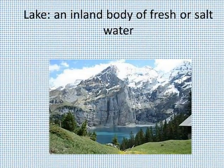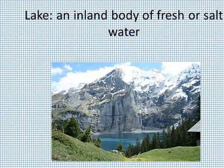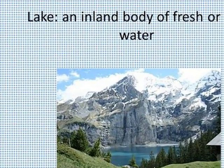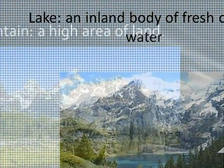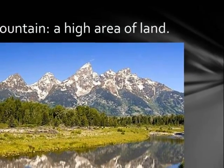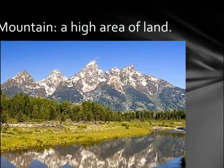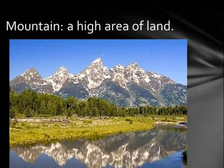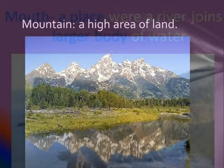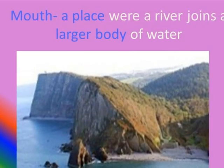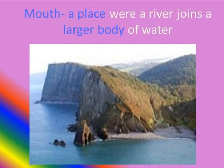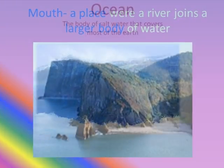A lake is an inland body of fresh water or salt water. A mountain is a high area of land with steep sides and a sharp peak. A mouth is a place where a river joins a larger body of water.